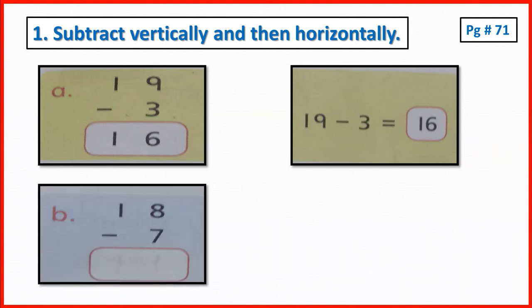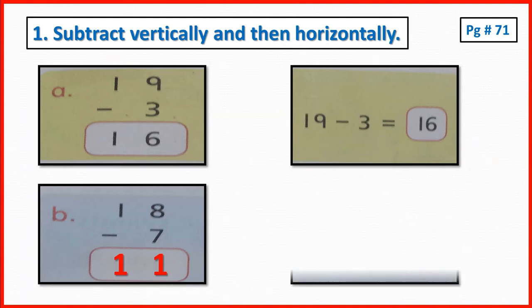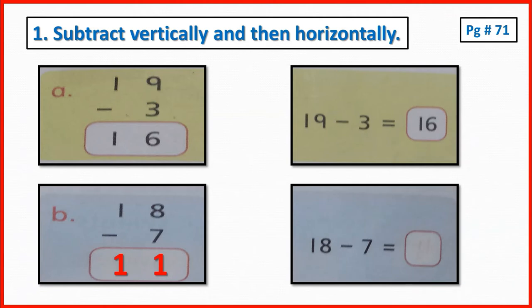The next is 18 minus 7. When 7 subtracts from 8, the number remains 1, and there is nothing to subtract from 1, so 1 remains the same. Now, subtract horizontally: when 7 subtracts from 18, the number remains 11.